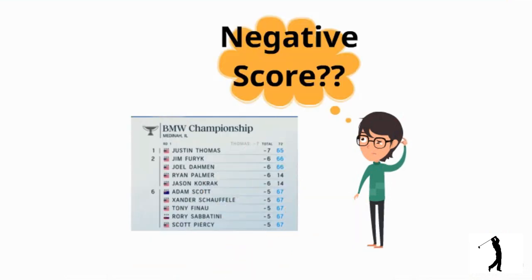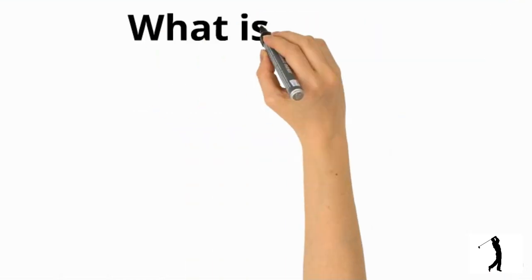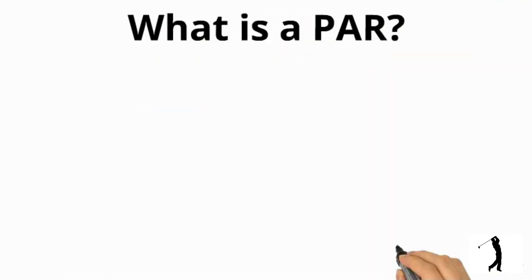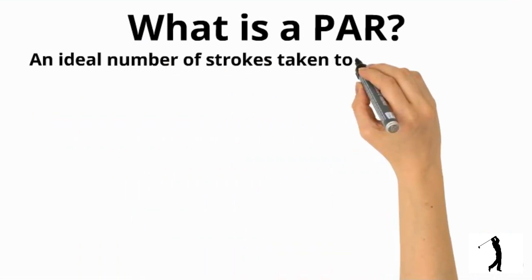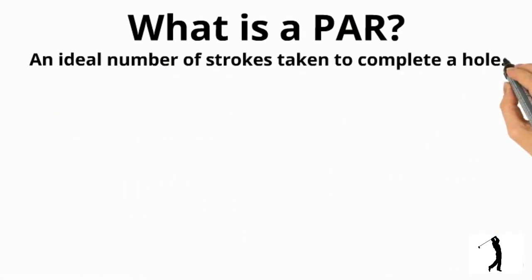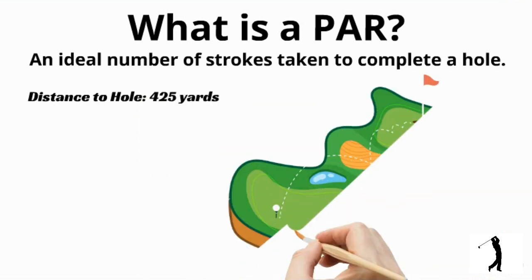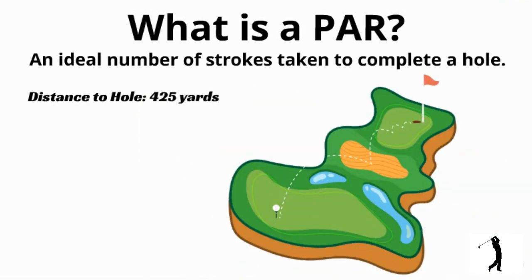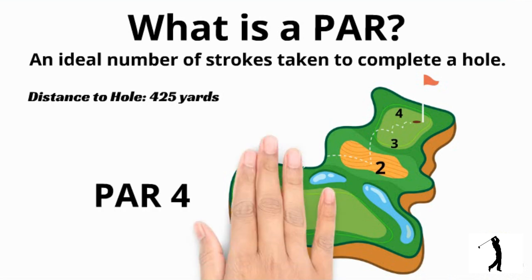To understand how scoring in golf works, you first need to know what is a par in golf. To put it in very crude terms, a par is the ideal number of strokes taken to complete a given hole. This is a typical golf hole layout where the hole is at a distance of 425 yards from the tee box. A tee box is basically the start position where you hit your first shot for each hole. So in this case, an ideal golfer would take about four strokes to hole the ball, and hence this hole would be a par 4.